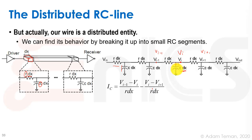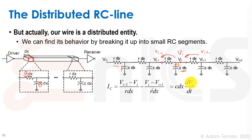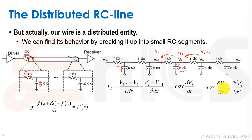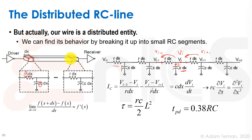Looking at one capacitor C·dx, the current through it is the sum of currents from the left and right resistors: IC = (Vi−1 − Vi)/(R·dx) − (Vi − Vi+1)/(R·dx). We also know IC = C·dx · dVi/dt. Combining these gives the diffusion (or wave) equation: RC · dVi/dt = d²Vi/dx². This is how waves propagate through the circuit — our current propagates through the conductor as a wave.